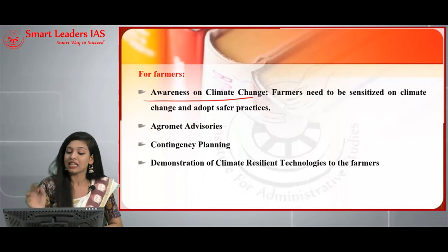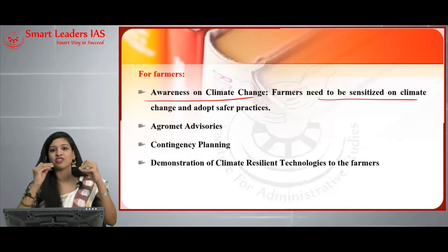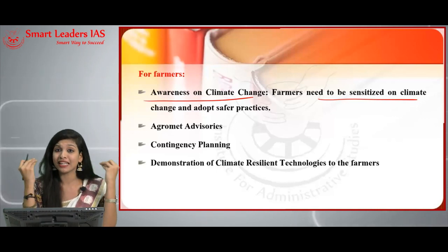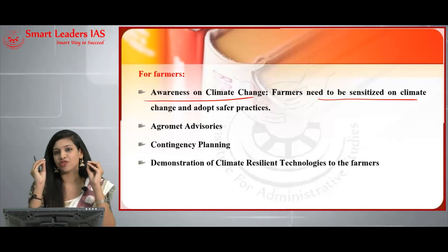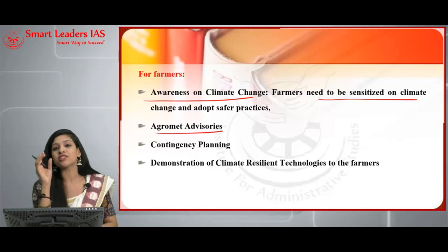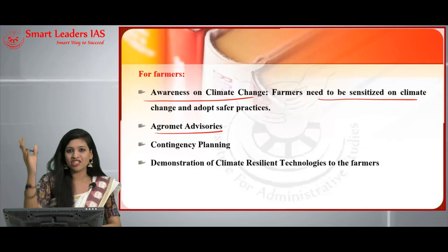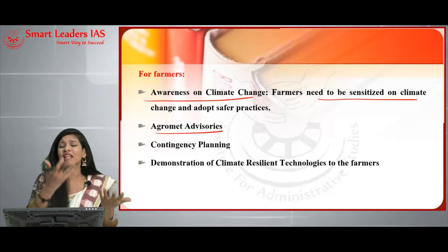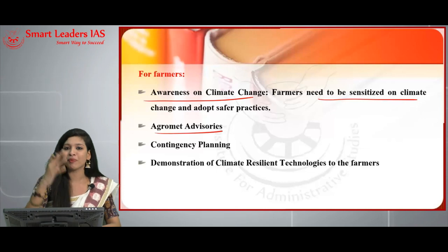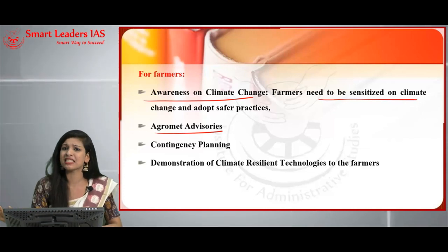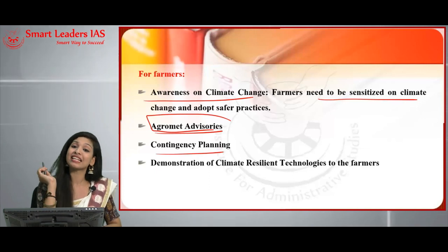Farmers need to be sensitized about climate change and adopt safer practices. They should be aware that temperature and rainfall changes will have a severe impact on their productivity. Agrometeorological advisories — bulletins issued as warnings to farmers — inform them of upcoming climate changes so they can plan accordingly and take precautions to prevent sudden large losses in agricultural production. Contingency planning for extreme weather events is also needed.